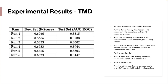Here are the experimental results for the TMD task. A total of six runs were submitted. Runs one to three were ternary classifications of 5G conspiracy, other conspiracy, and non-5G conspiracy classes. Runs four to six were binary classifications of 5G conspiracy and non-5G conspiracy samples, where the non-5G conspiracy class combined other conspiracy samples with non-5G conspiracy samples.